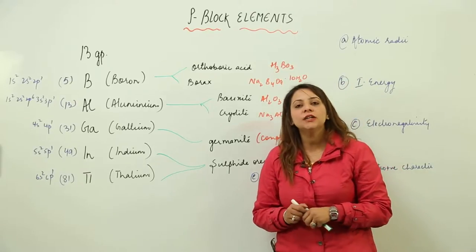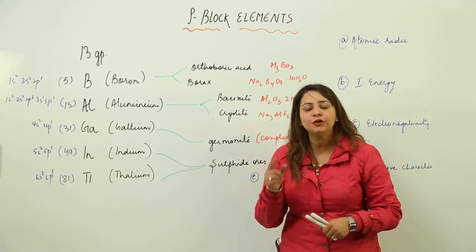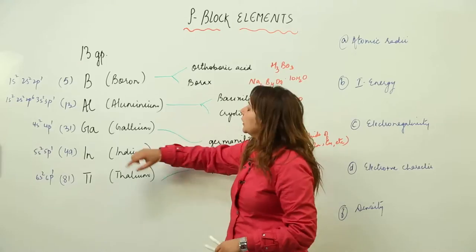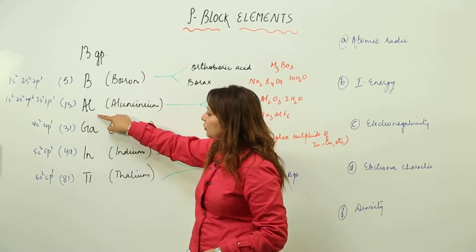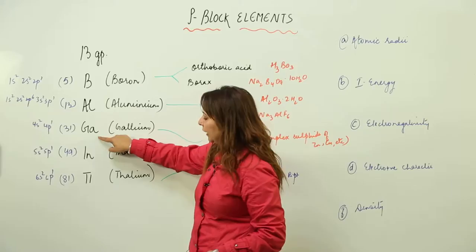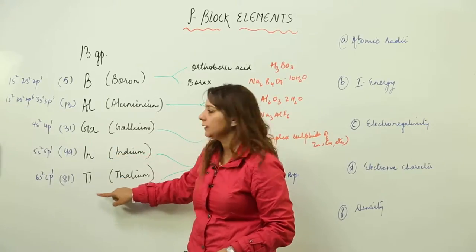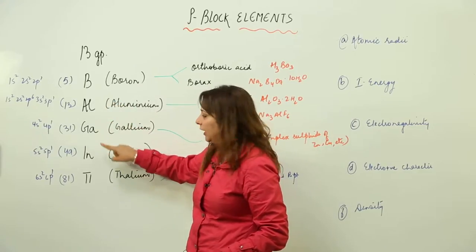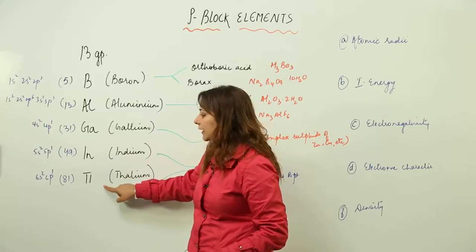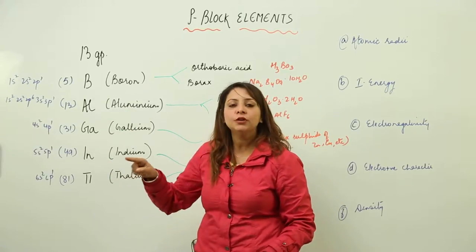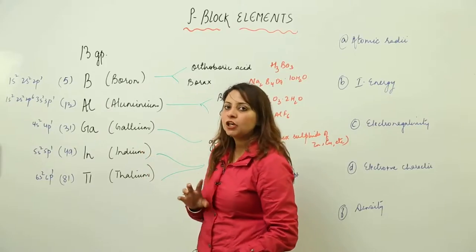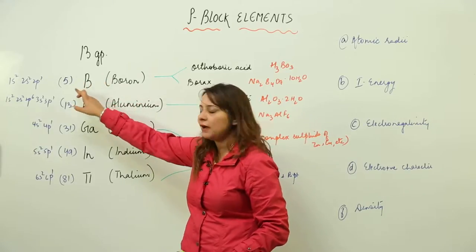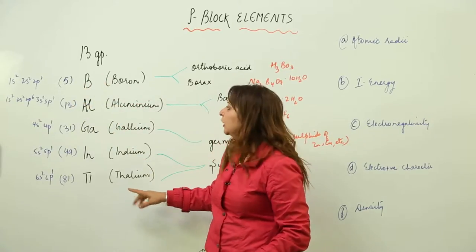We are going to start with Group 13, that is the first group of the P block. Group 13 includes these elements: boron (B), aluminium (Al), gallium (Ga), indium (In), and thallium (Tl). These elements are called members of the boron family, because the family name is governed by the element present at the top.